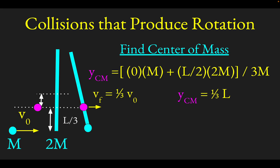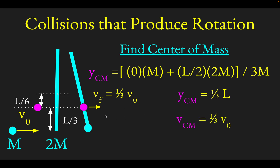The center of mass is one third of the way up the stick, which also happens to be one sixth of the way from the center of the stick. One third of the way up is two sixths, and one more sixth gets you to the center of the stick — so the axis of rotation is shifted L/6 from the stick's own center. The velocity of the center of mass remains constant throughout the crash at one third of the ball's initial velocity.